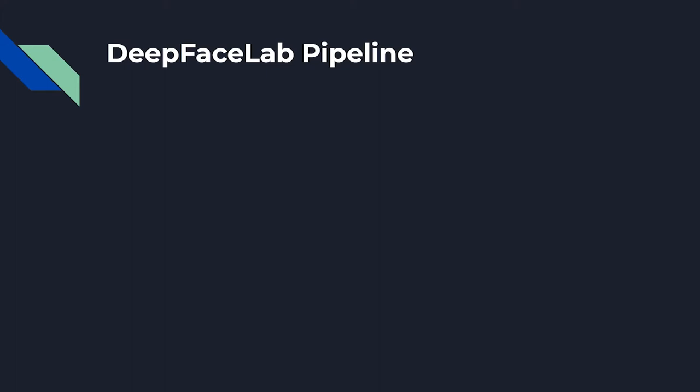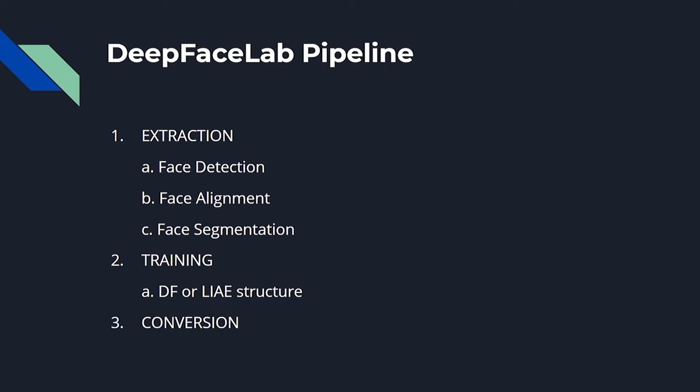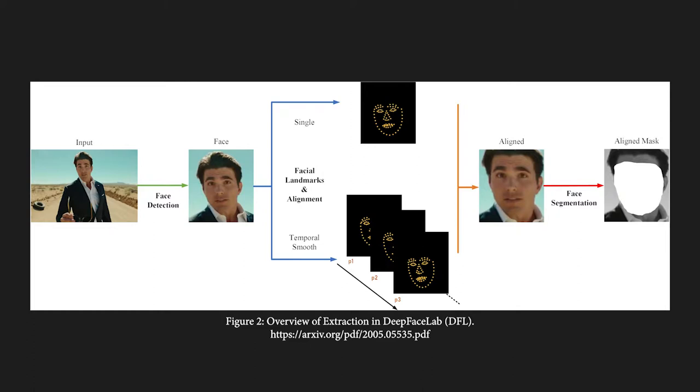For DeepFaceLab specifically, the data pipeline has three main components: extraction, training, and conversion. These three parts are sequential, as each step cannot happen without proper data from the previous.